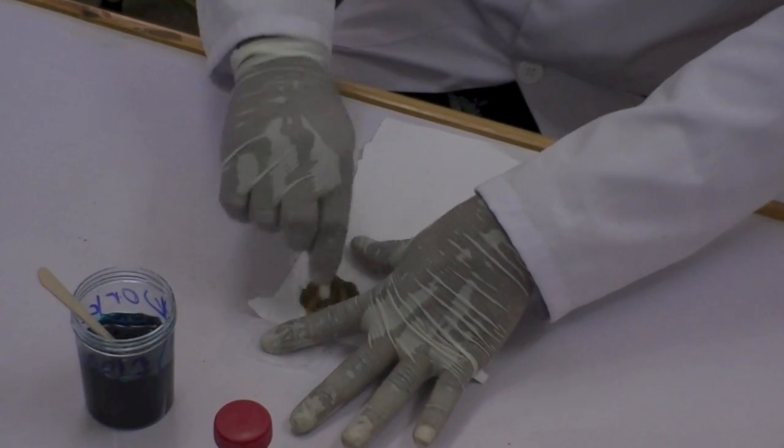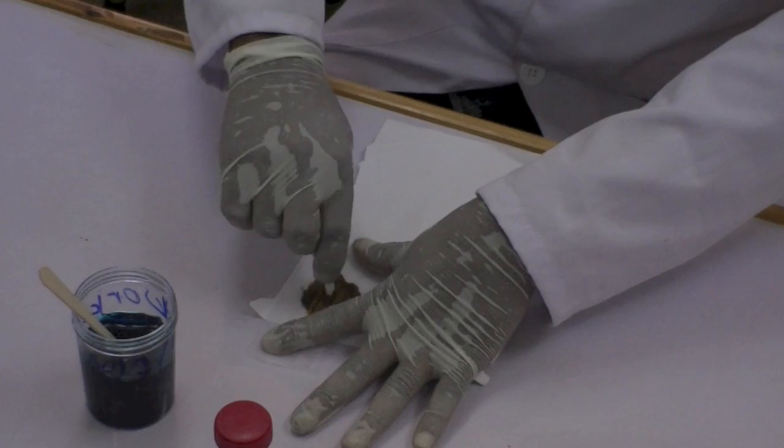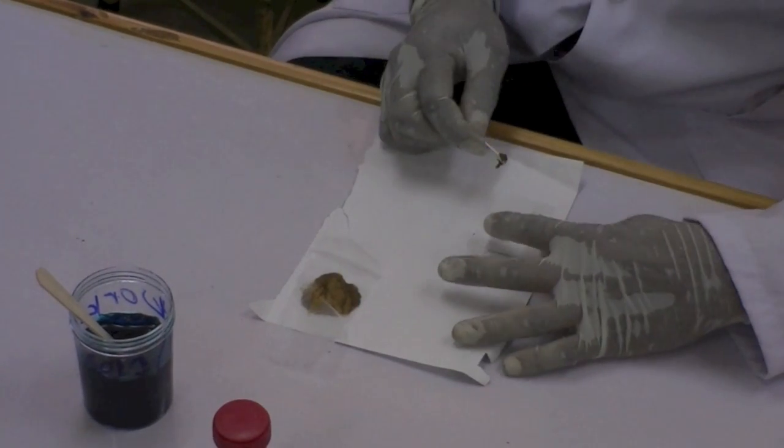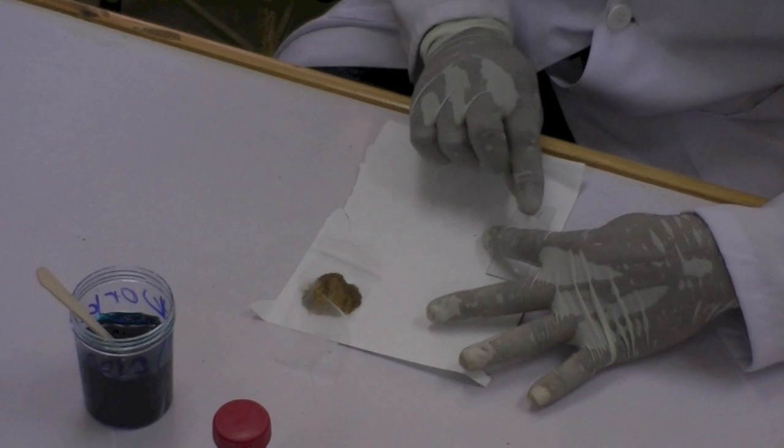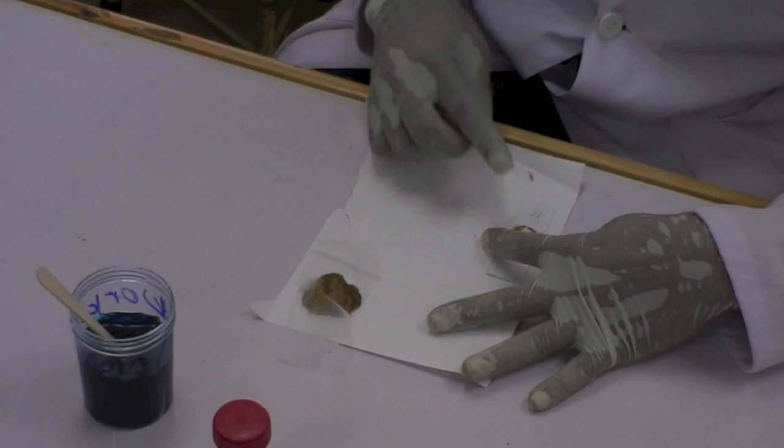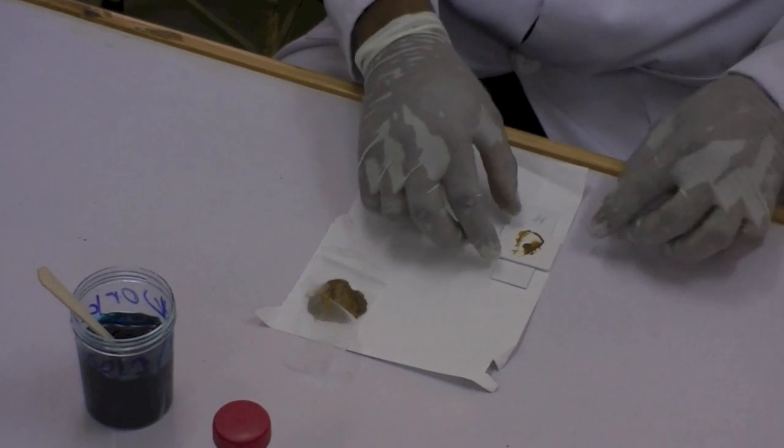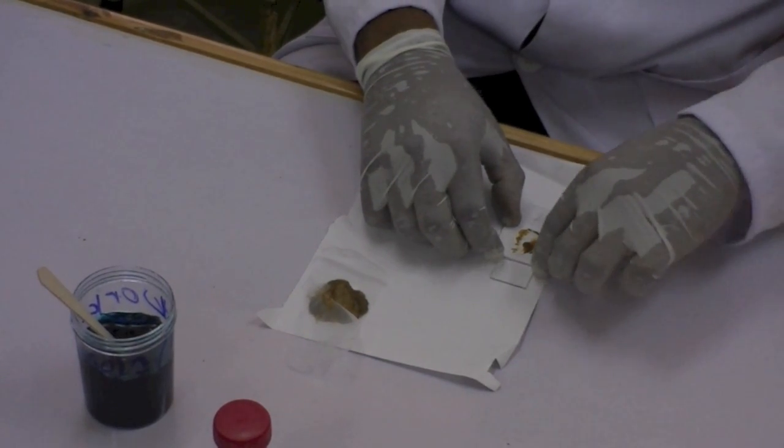To collect the stool that was sieved, scrape the spatula across the upper surface of the screen. Then put the stool from the spatula in the hole of the template so that it becomes completely filled. When removing the template carefully, you'll notice that a cylinder of stool is left on the slide.